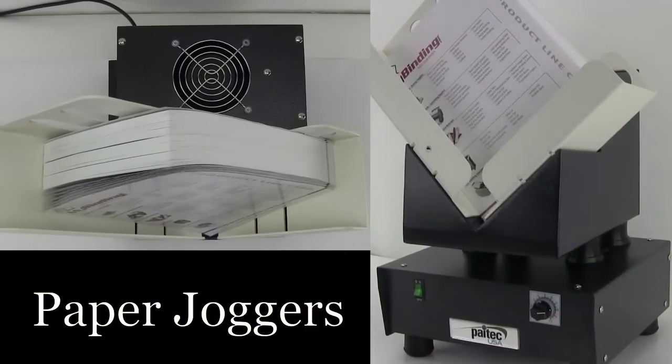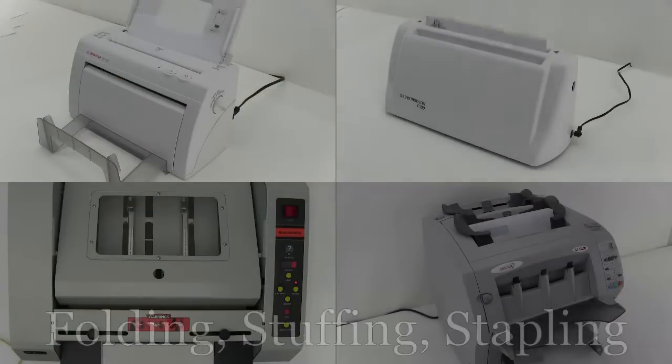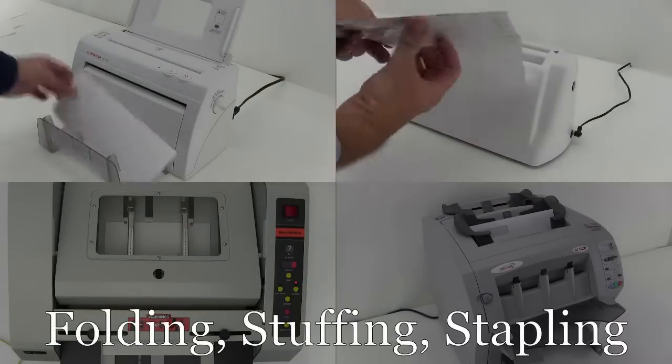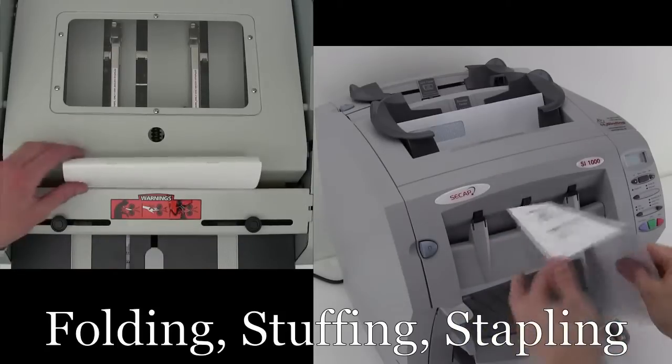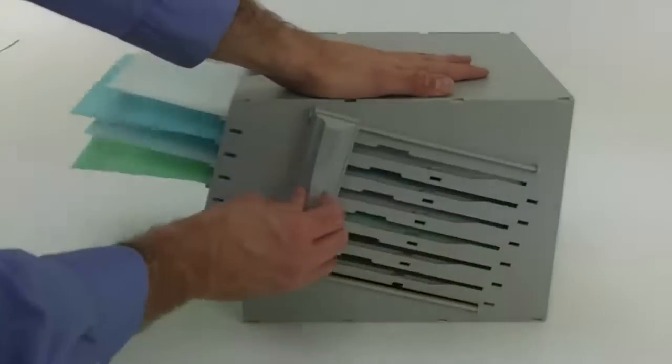We have paper joggers and aerators. We have folding that's both on a small level as well as a large industrial level that stuffs envelopes and staples booklets. Customer service is on the phone to help you find what you want and customize any order.